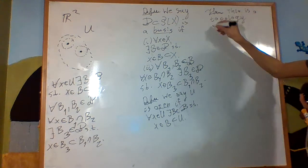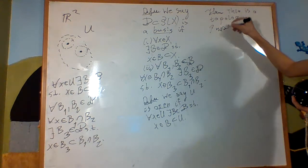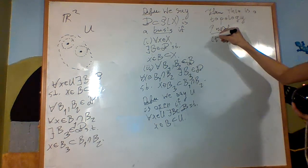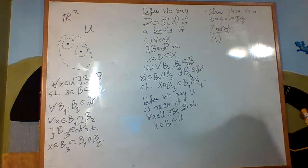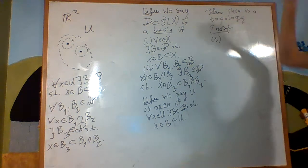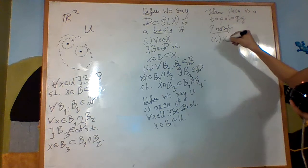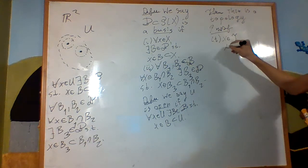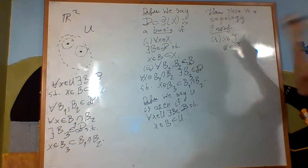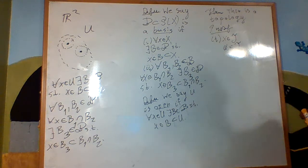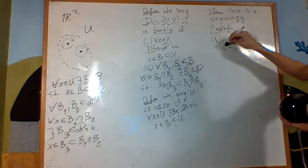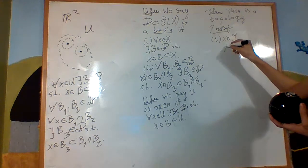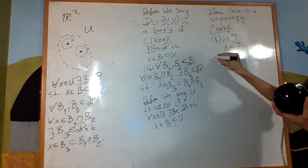What we have to check: firstly, that X is an element of the topology — well, that's just the first condition. Is the empty set an element of it? Obviously, because there are no elements in the empty set, so there's no way you could find a counterexample.